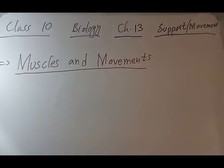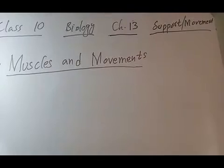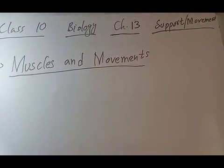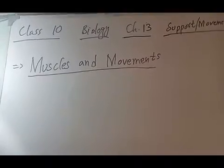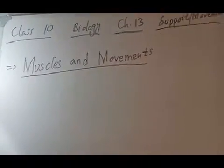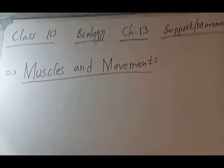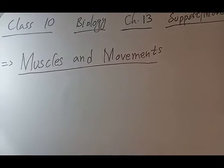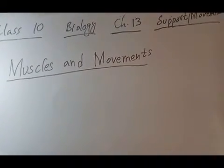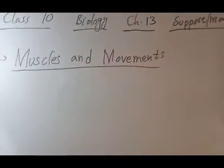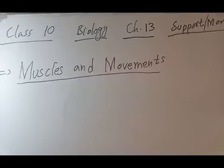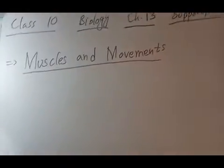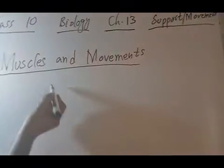The next topic is muscles and movements, Chapter 13, Sport and Movement, Biology Class 10. In the human body, movement is possible because of muscles and bones. If any one of them is not present, movement will not occur. If muscles are not present we will be unable to move, and if bones are not present we will not move.